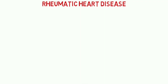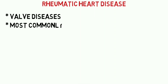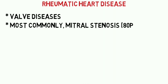Rheumatic heart disease occurs following improperly or inadequately treated bacterial infection caused by beta-hemolytic streptococci. This commonly affects the valves of the heart. The most commonly affected valve is the mitral or bicuspid valve, leading to mitral stenosis, which occurs in about 80% of cases of rheumatic heart disease.